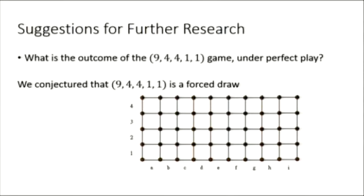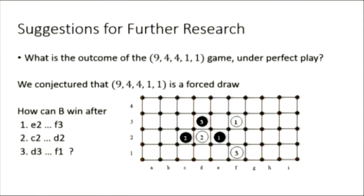Other than the results we have stated above, we have also investigated the (9,4,4,1,1) game. We want to show that it is a forced draw because we found that one of the so-called winning lines, in fact, can lead to a draw. We have also tried other responses by white, I mean by black, but it seems that none of the responses can give black the win.